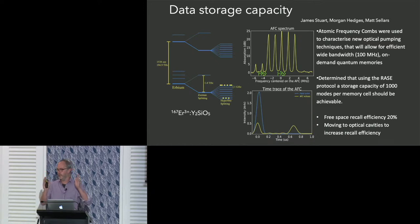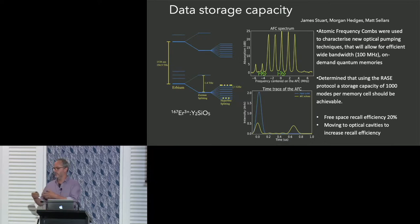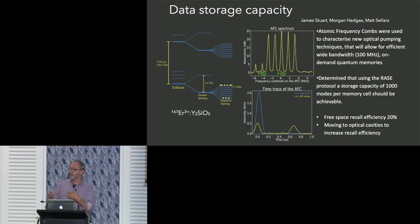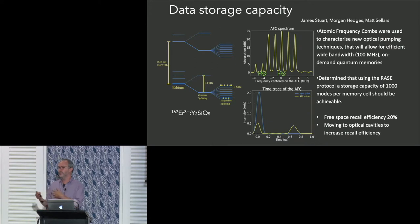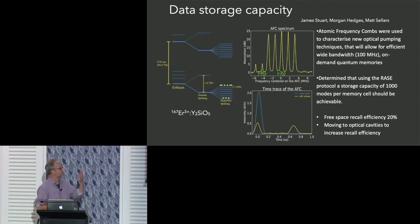The number of modes we can store is dictated by how long we can wait before applying the pi pulse for rephasing. At about 100 microseconds, a single memory unit is capable of storing about 1000 modes on every pixel of this device — which gets us to the realm we actually need for the first stage of the satellite memory scheme.